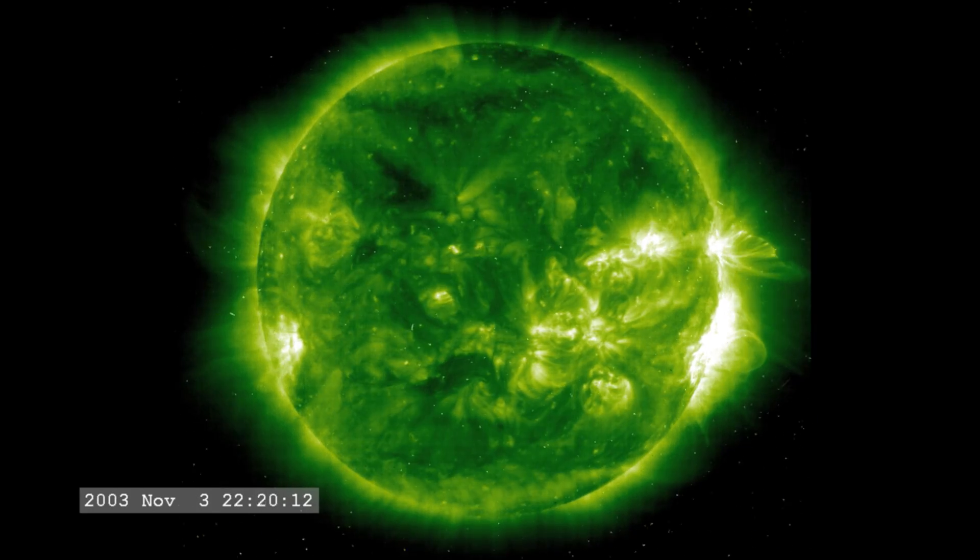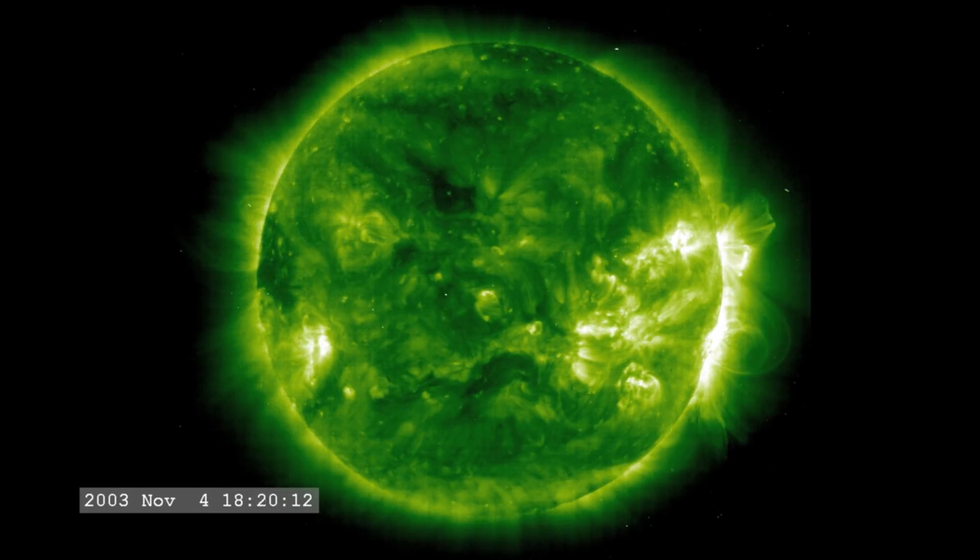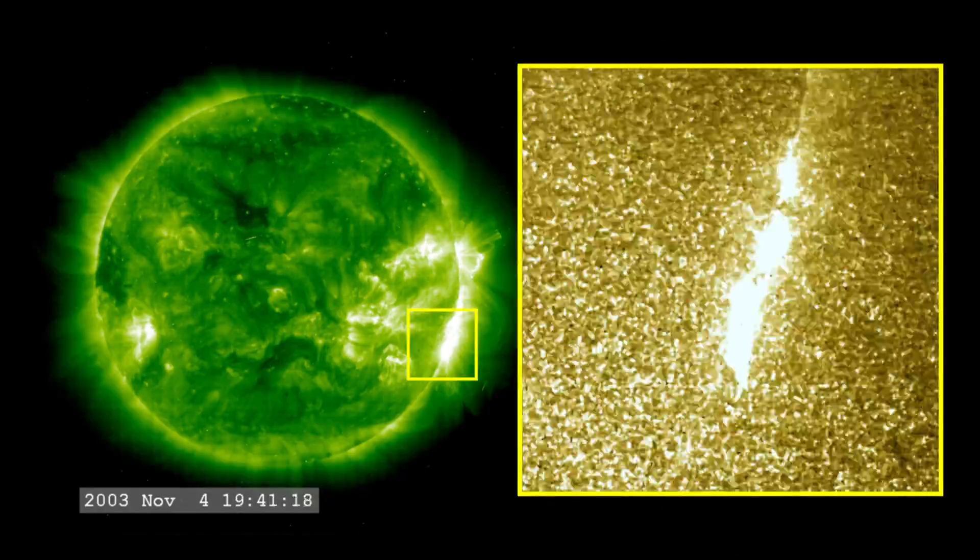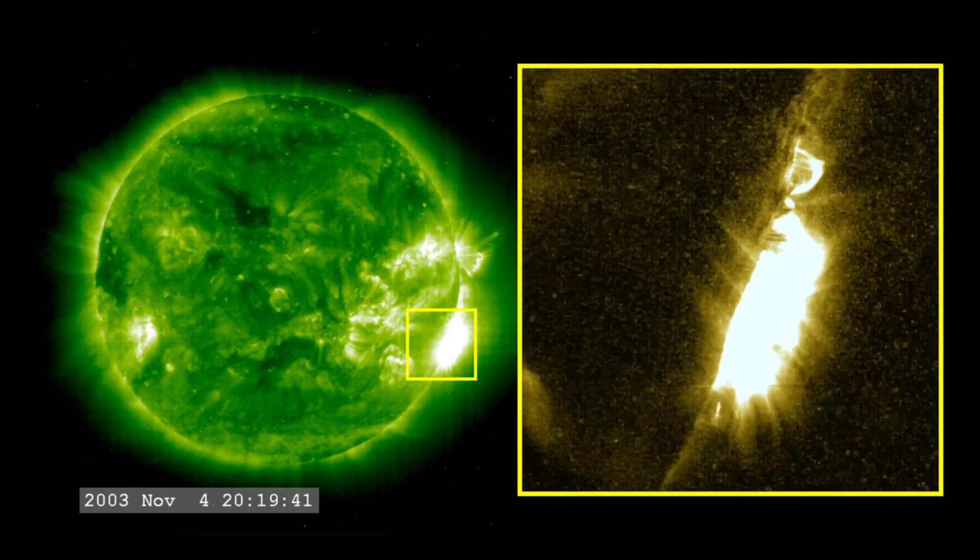The most powerful flare on record was in 2003, during the last solar maximum. It was so powerful that it overloaded the sensors measuring it. They cut out at X-17, and the flare was later estimated to be about X-45.